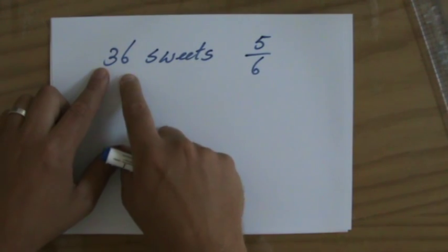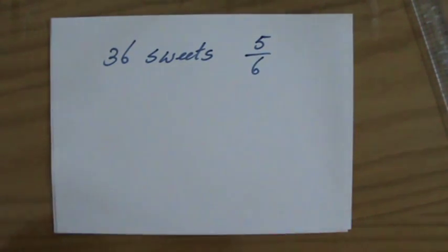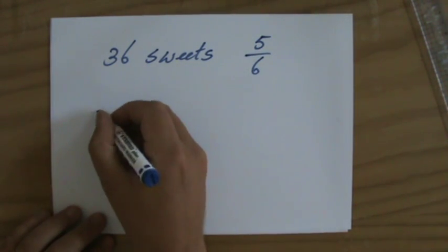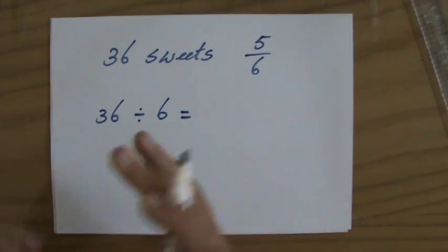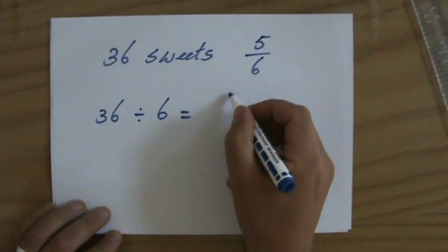So the 36 sweets, I divide into 6 equal portions, and I take 5 of them. What is 36 divided by 6? I divide into 6 equal portions, well, that is 6.